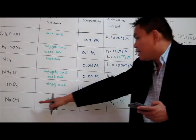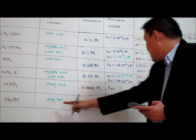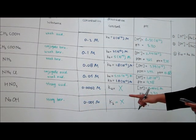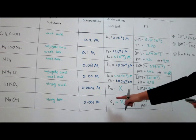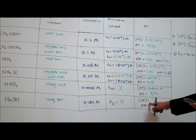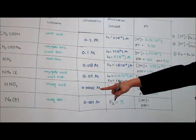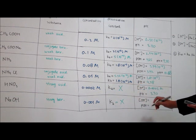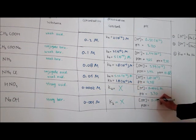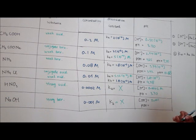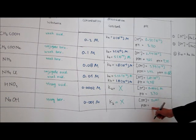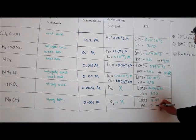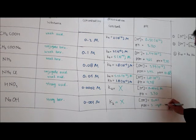Similarly, NaOH is a strong base, so the concentration of OH⁻ is the same as the concentration of NaOH: 0.001 mol per dm³. If you're good with indices, you know how to calculate the pOH — it will be 3, which means that pH will be 11.